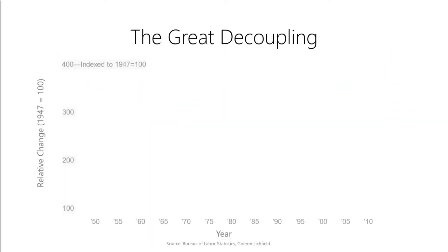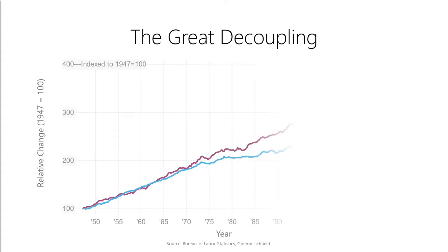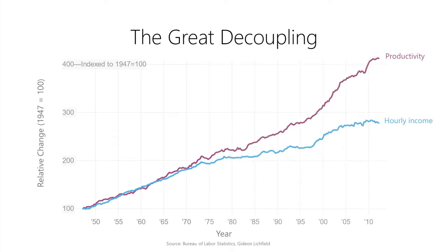This phenomenon is referred to as the Great Decoupling. Essentially, productivity in the USA continues to rise year after year. However, somewhere in the 1970s, labor compensation broke away from the productivity gain trend. This diverging trend will likely continue and become amplified with further AI automation.